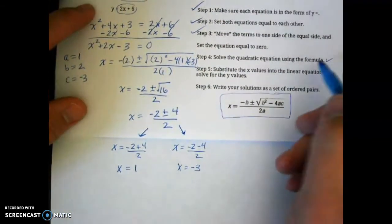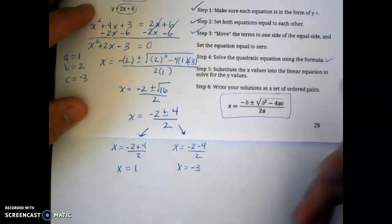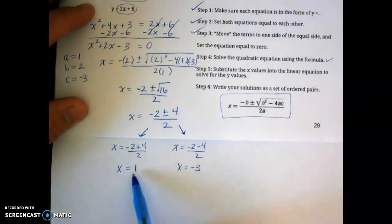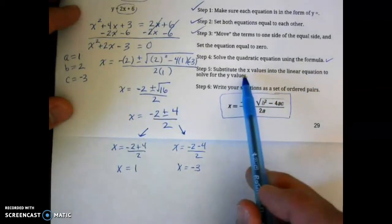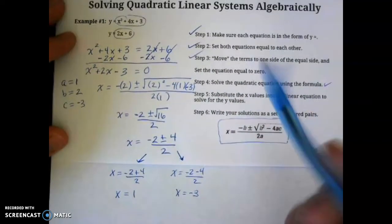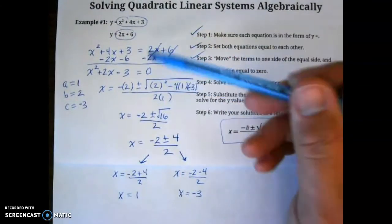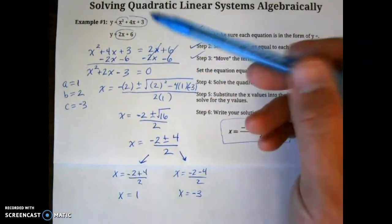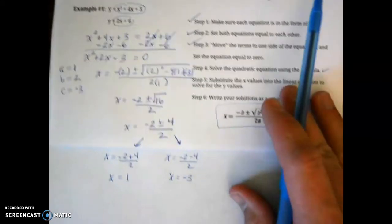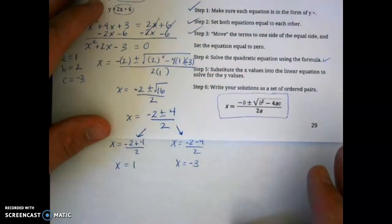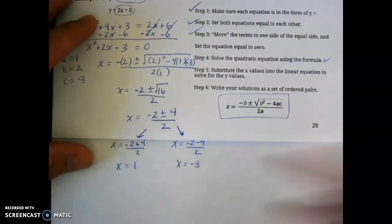And that was step 4, to solve the quadratic equation using the formula. For step 5, we're going to take these x values, because I need to get the y values. We're going to substitute the x values into the linear equation to solve for the y variables. So just a side note. You really can substitute into either equation, but it's naturally easier to substitute into the linear, because it's less things to substitute and less terms to deal with.